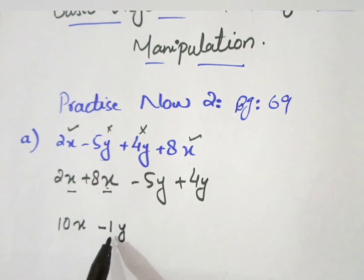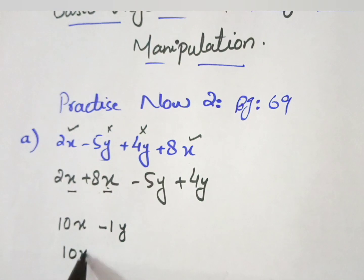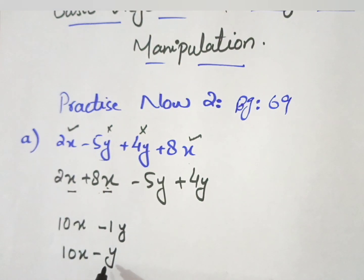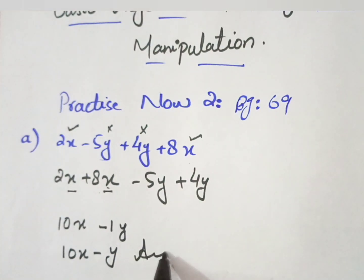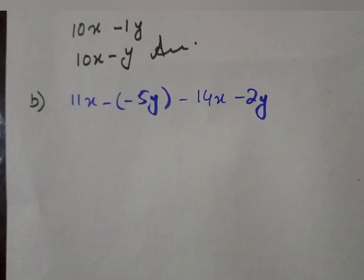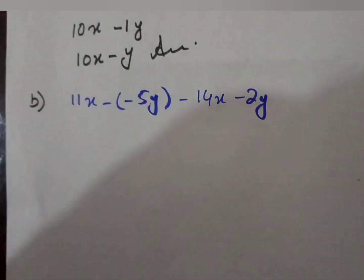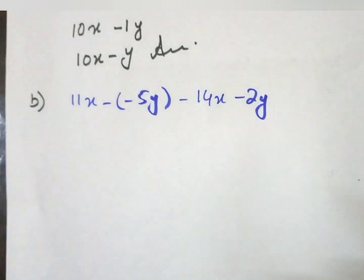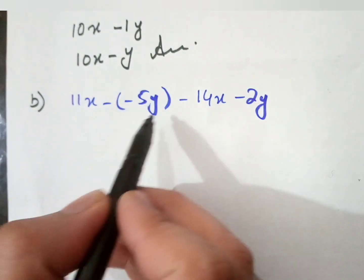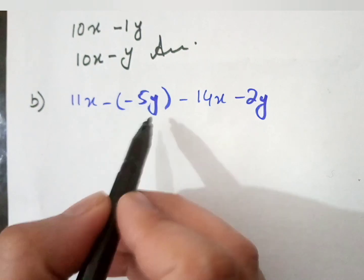Whenever there is a coefficient of 1, there is no need to write it because whenever no coefficient is mentioned it is understood to be 1. So this is your Part A answer: 10x minus y. Now we move towards Part B.